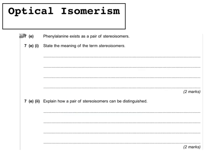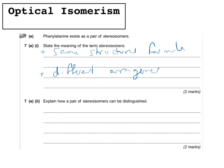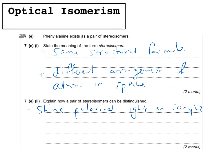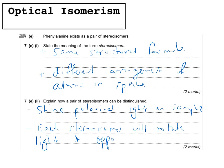Here is another typical question. Phenylalanine exists as a pair of stereoisomers — state the meaning of the term stereoisomers. The answer is: same structural formula but a different arrangement of atoms in space. Then explain how a pair of stereoisomers can be distinguished — worth two marks. First mark: shine plane polarised light on the sample. Second mark: each stereoisomer will rotate the light in opposite directions — it is important you use the word 'opposite'.